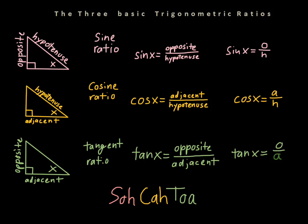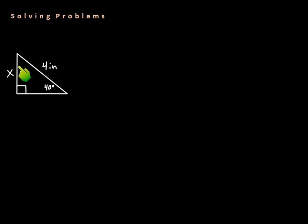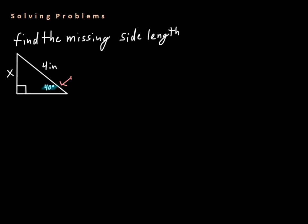So how can we use this to actually solve a problem? Let's say we have a triangle where the angle is 40 degrees and the hypotenuse is 4 inches long, and we want to find the height of the triangle — this side over here. We can use trigonometry to do this: we only have one side and an angle, and we can figure out the other side. First, we have to identify what sides we have in relationship to the angle. We need to think about this in terms of what we call a reference angle — that's the angle we're working from.